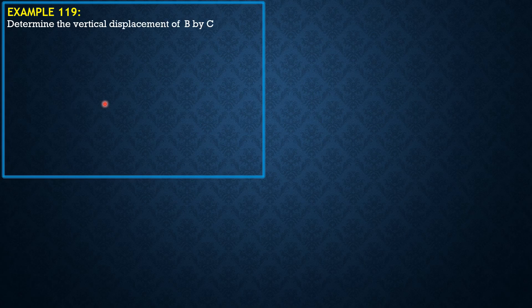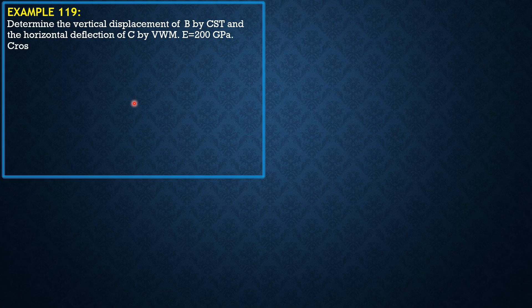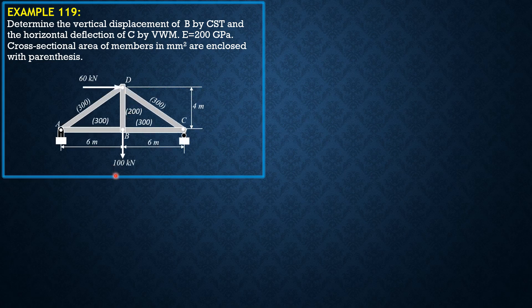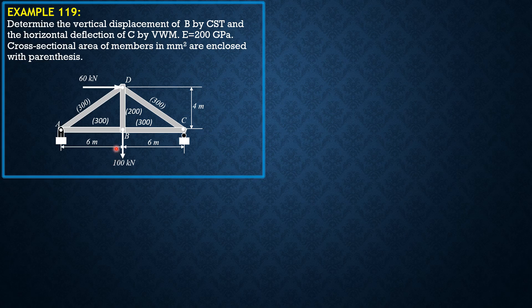Determine the vertical displacement of B by Castigliano's second theorem and the horizontal deflection of C by virtual work method. E is 200 gigapascals. Cross-sectional areas of members in millimeter square are enclosed with parenthesis. So here is the figure.